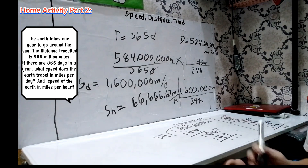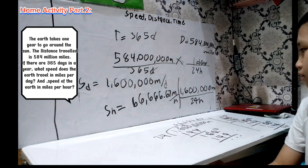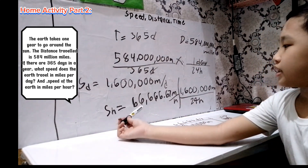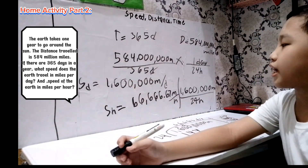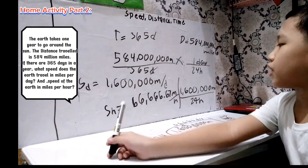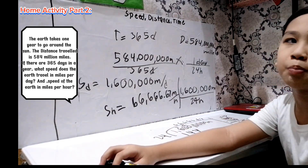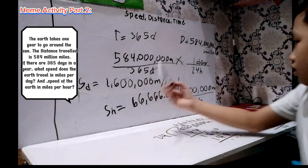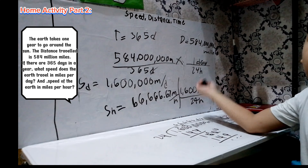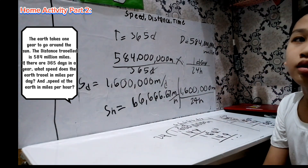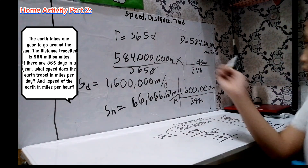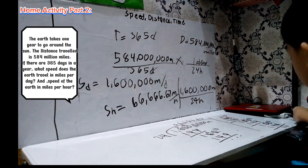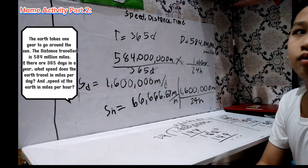The speed per hour is 66,666.67 miles per hour. From the speed above, which is 1,600,000 miles per day, you just divide it by 24 hours because in one day we have 24 hours. As you can see, the 6 is repetitive.